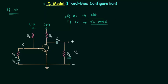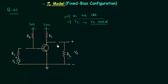In step number two we need to short circuit all the capacitors in this circuit. There are only two capacitors, C1 and C2, which are called coupling capacitors. C3 is not present in this circuit because C3 is used to short circuit the emitter resistance RE. But in fixed bias configuration there is no emitter resistance, so we do not require the bypass capacitor C3. So we will short circuit capacitors C1 and C2 in step number two.